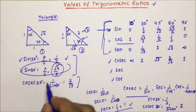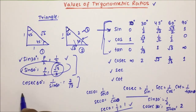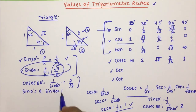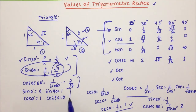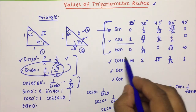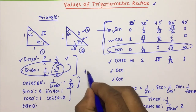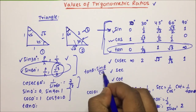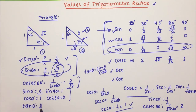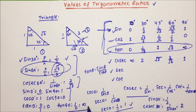Many of you may ask: what about 0 and 90 degree? Sin 0 is easy to remember — sin 0 is 0. If sin 0 is 0, then sin 90 will become 1. If cos 0 is 1, then cos 90 will become 0. And tan theta is nothing but sin theta divided by cos theta, so tan 0 = sin 0/cos 0 = 0/1 = 0. And tan 90 = sin 90/cos 90 = 1/0 = infinity.